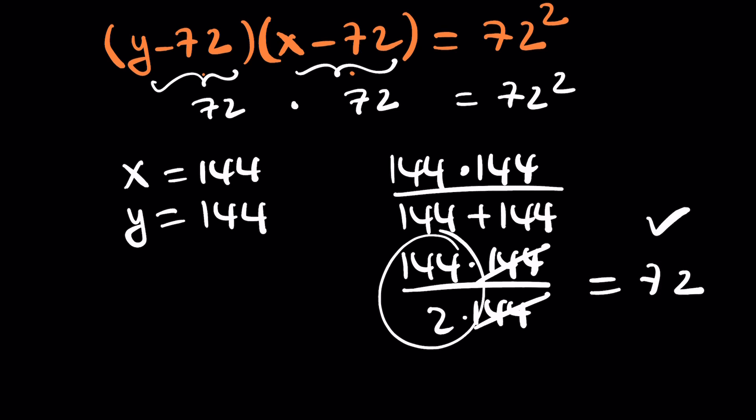So our answer checks and we don't have to do this every time, but I just wanted to show you once so you can be more confident. This is one of the solution pairs. There are more, obviously, because 72 squared can be factored into other numbers.